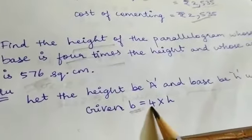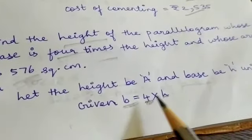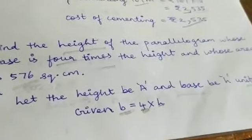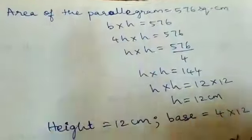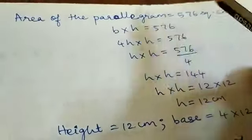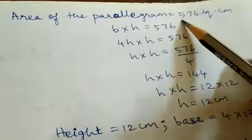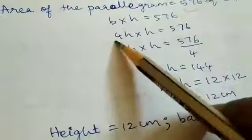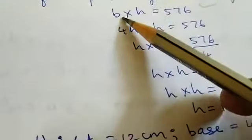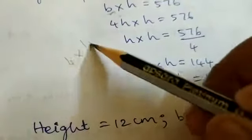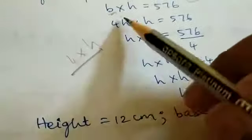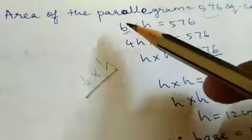Area of the parallelogram formula is base into height. So 576 equals base into height. Base B equals 4 into H, so we substitute B equals 4H.